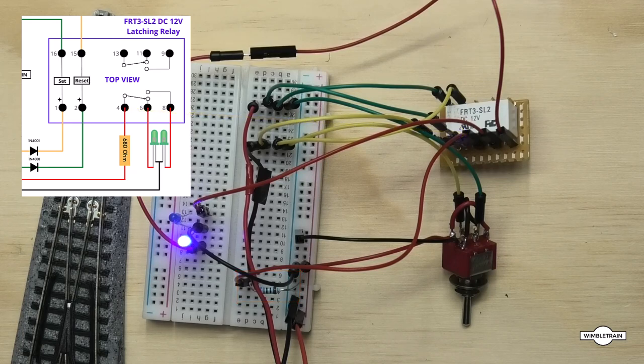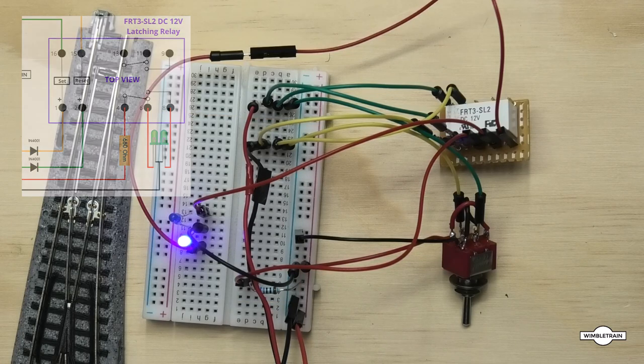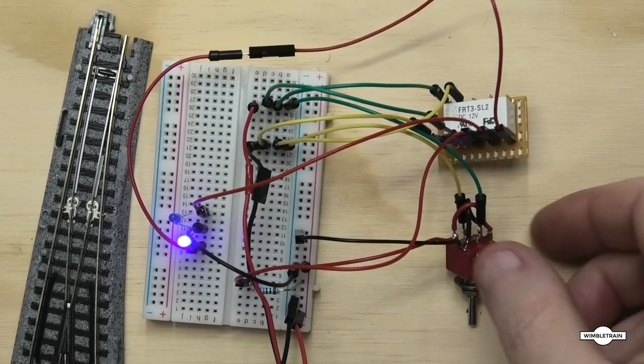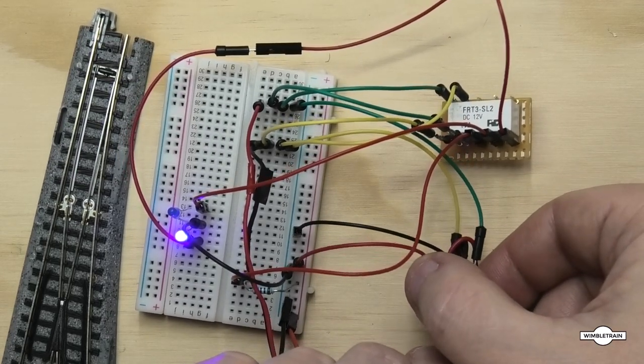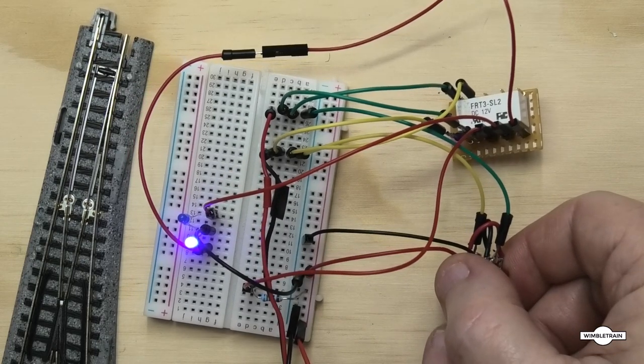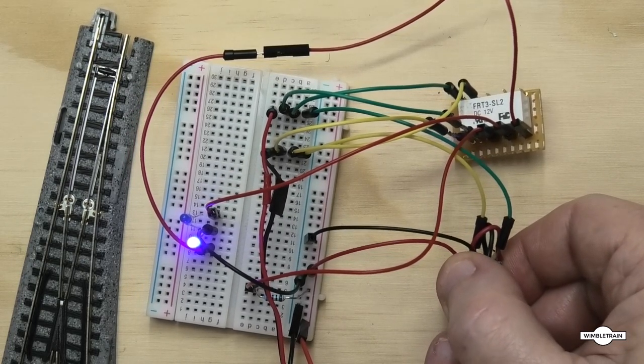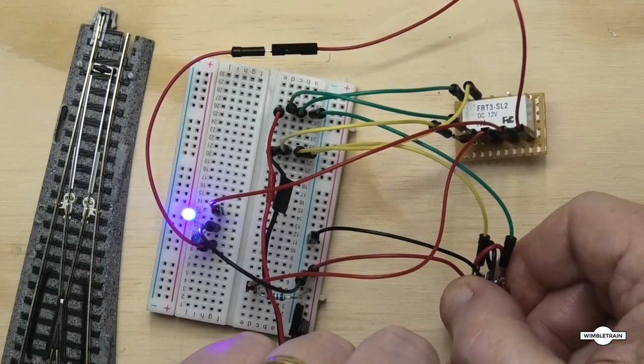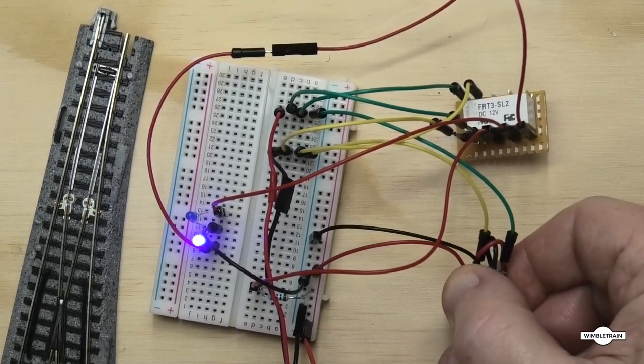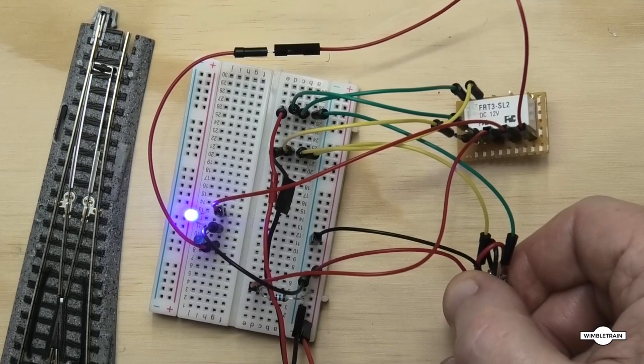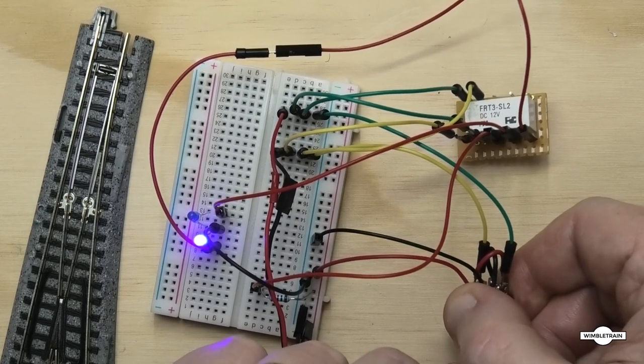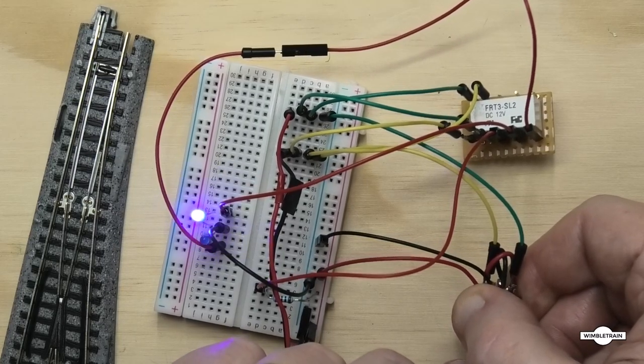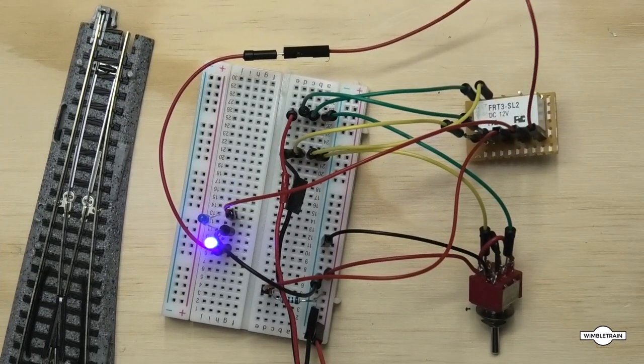So at the moment we've got one of the LEDs up which we expect. So if we flick this switch, hopefully it'll change over the turnout and the LED if I switch it the right way that is. There we go. That's basically it then.